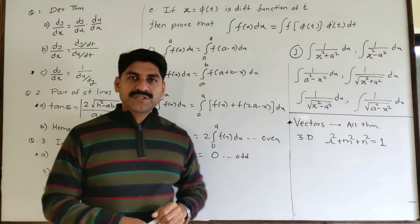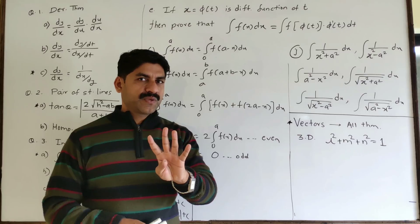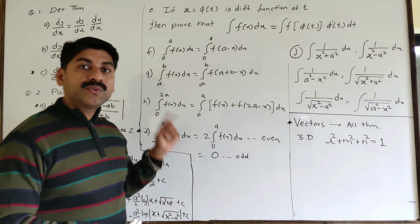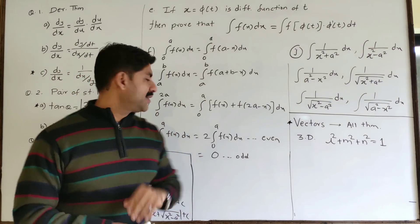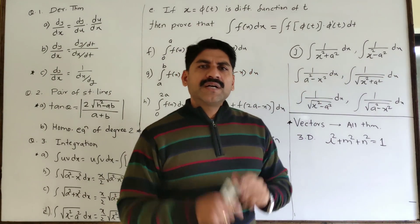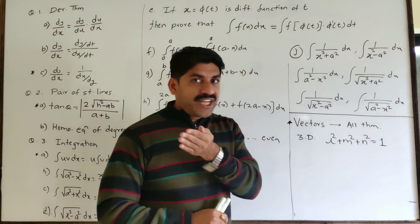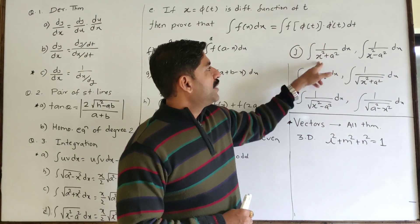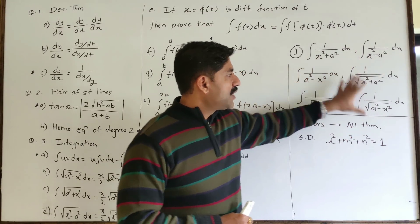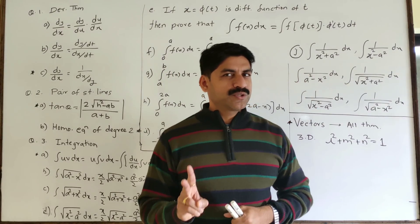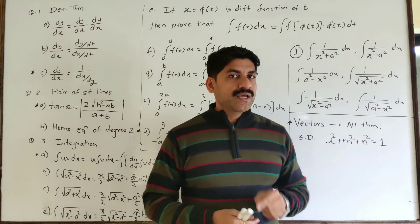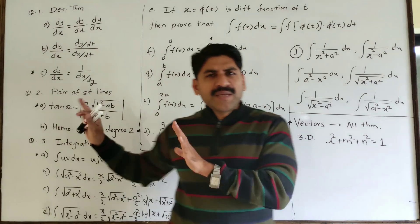There are properties for even and odd functions — 4 properties total. If you have a problem, you can use the relevant formula. Key formulas include 1 upon x-square plus a-square and 1 upon root of x-square. There is a 3-term root formula you can use.